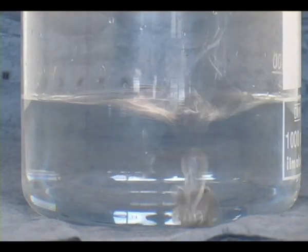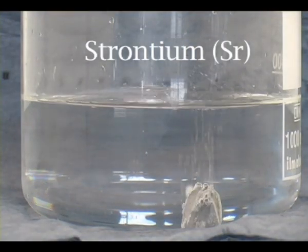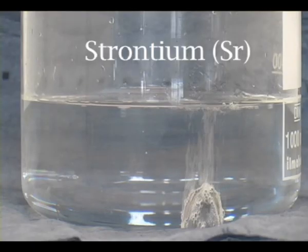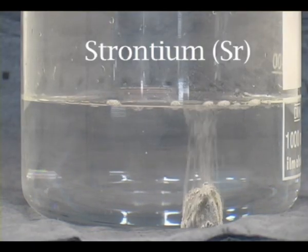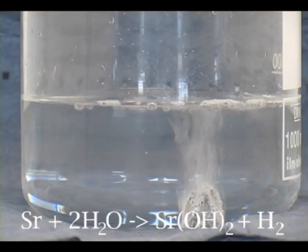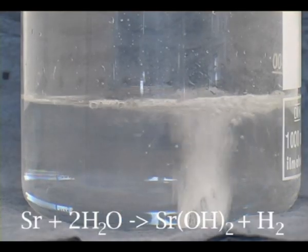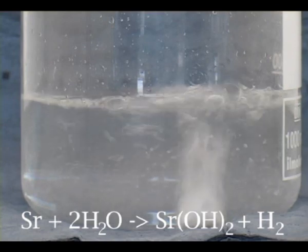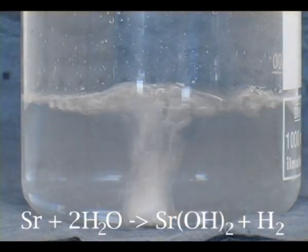If we continue down group 2, we find strontium. This has to be stored under oil to stop it being oxidized by the air. The oil on the strontium causes the reaction to begin slowly, but gradually it picks up, and we can see that the strontium is reacting vigorously with the cold water.